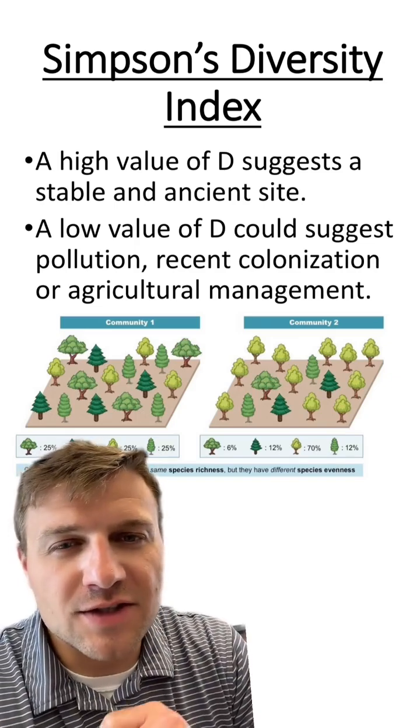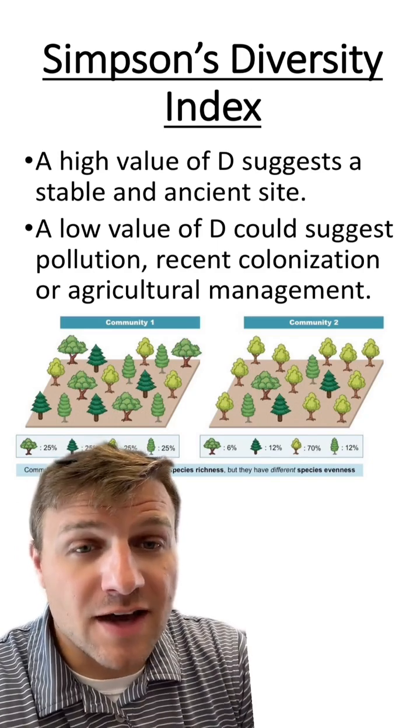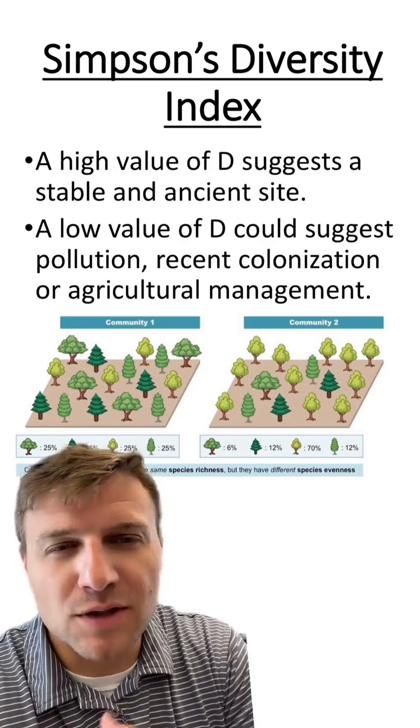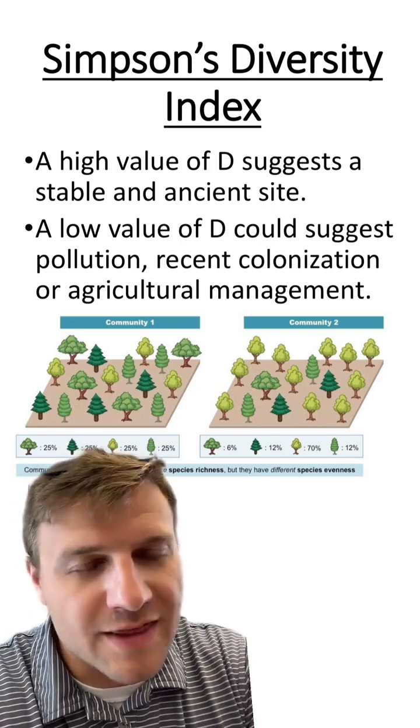A high D value is going to suggest a stable and ancient environment, while a low D value is going to suggest something's going on in that ecosystem, such as pollution, recent colonization, or agricultural management.